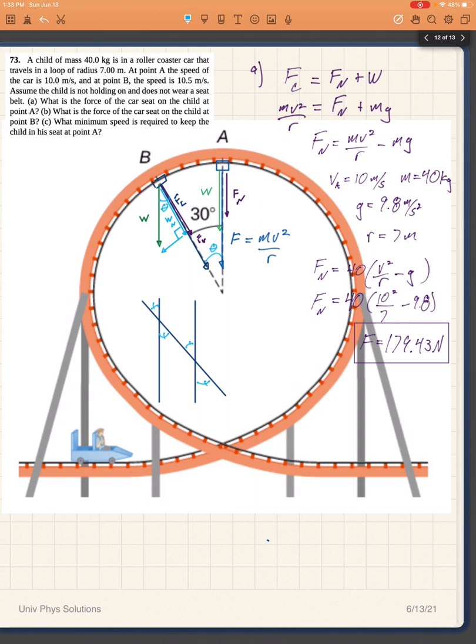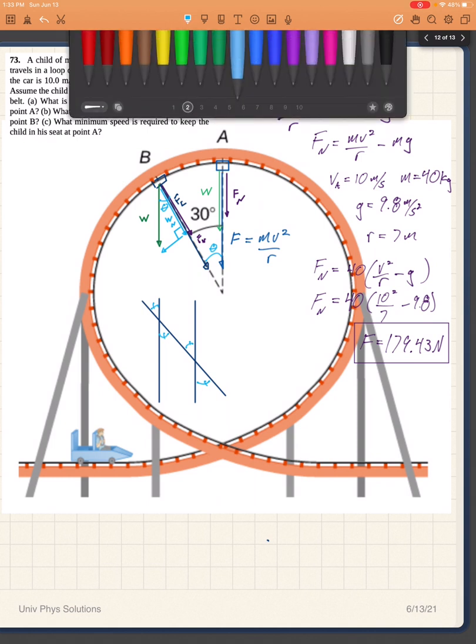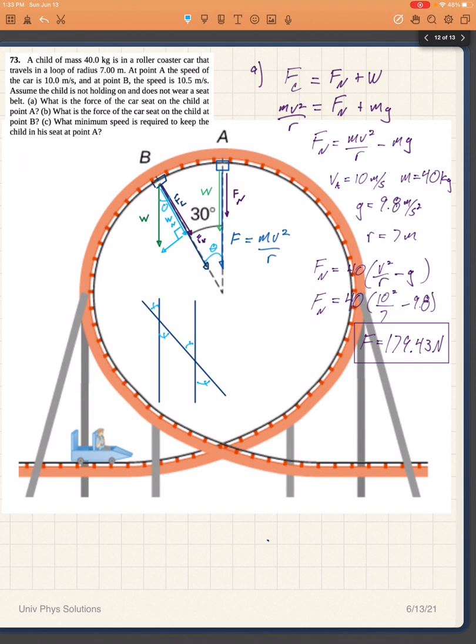And then we see that the normal component of the weight, the one that's along the line to the center, has to be equal to the cosine of theta times w. Because w is the hypotenuse, this side along the radius would be the side that is adjacent to theta. And so then we have cosine of theta is equal to the adjacent side, w_n, over the hypotenuse, which is the weight.